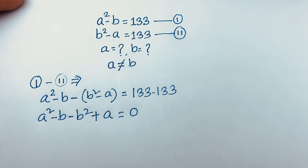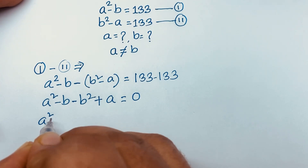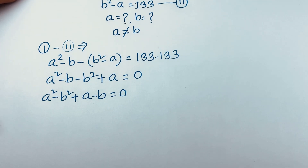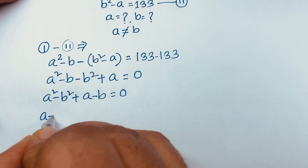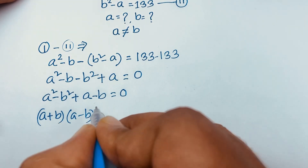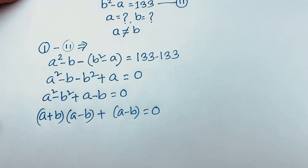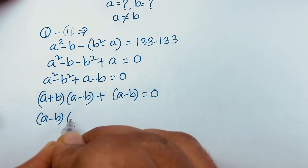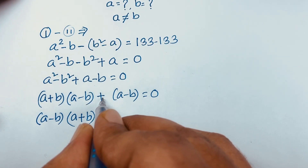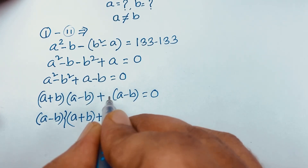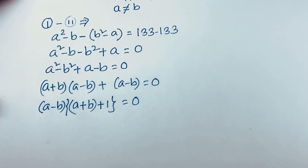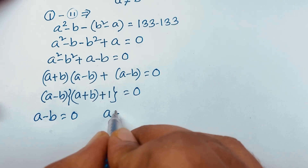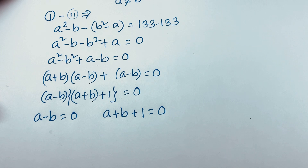This gives us a squared minus b squared plus a minus b is equal to zero. According to the factoring rule, a squared minus b squared equals (a+b)(a-b), so we get (a+b)(a-b) plus (a-b) equals zero. Factoring out (a-b), it becomes (a-b) times (a+b+1) equals zero. So we have two cases: a minus b equals zero, or a plus b plus 1 equals zero.